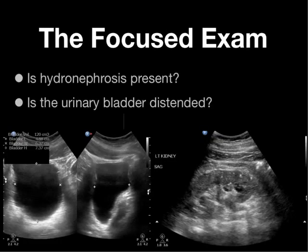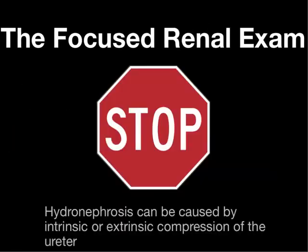Let's look at the focused renal ultrasound exam. The focused clinical questions are: first, is hydronephrosis present? Second, we can also do this exam to look if the patient has a distended urinary bladder and obtain bladder volume measurements. Hydronephrosis is going to be an indirect finding in patients with obstructive uropathy.